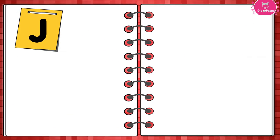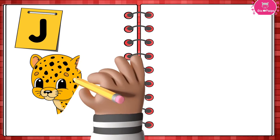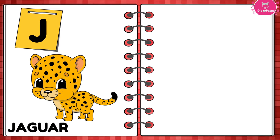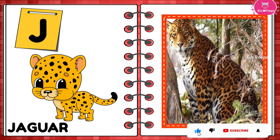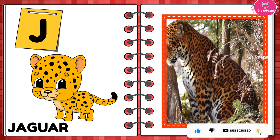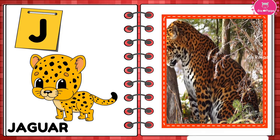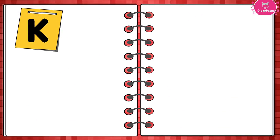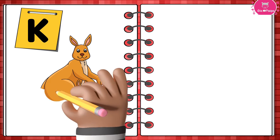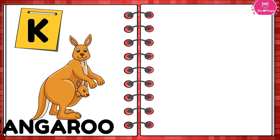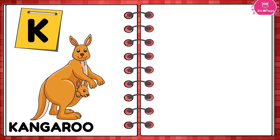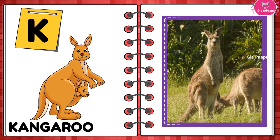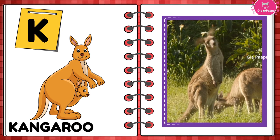J is for Jaguar. Jaguar. J is for Jaguar. Jaguar. K is for Kangaroo. Kangaroo. K is for Kangaroo. Kangaroo.